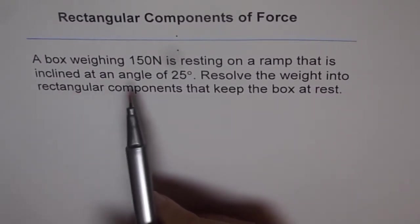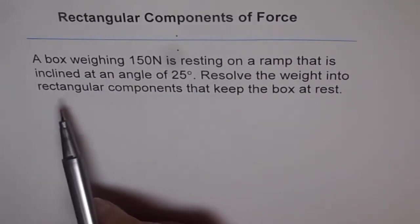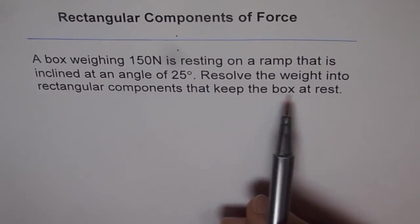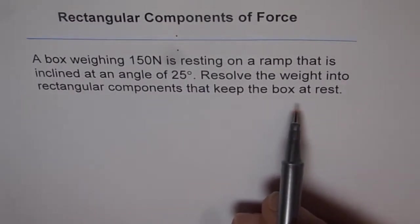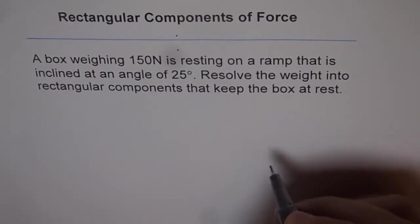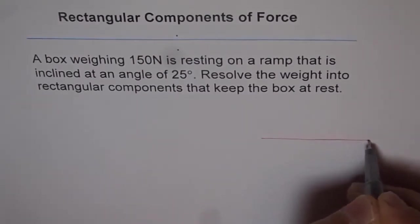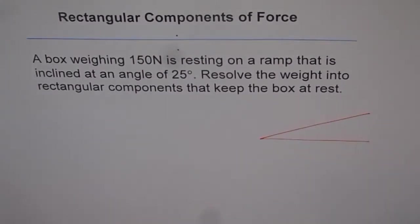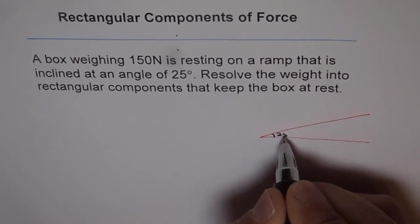A box weighing 150 newtons is resting on a ramp that is inclined at an angle of 25 degrees. Resolve the weight into rectangular components that keep the box at rest. Let's first sketch a ramp — with the horizontal, the ramp is making an angle of 25 degrees.